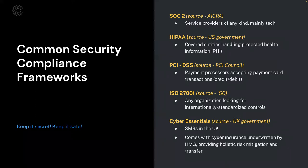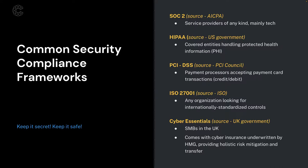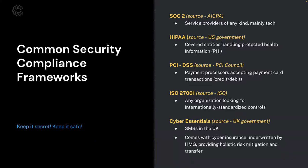ISO 27001, sourced from ISO, can be used by any organization looking for an internationally recognized set of security controls. ISO 27001 mandates the creation of an ISMS — an Information Security Management System. It helps your organization build out the capability, processes, and procedures needed to implement information security. Once that ISMS is built, there's also a set of controls required depending on what type of business you're doing. Your ISMS is the actual function within the business that implements those security controls.